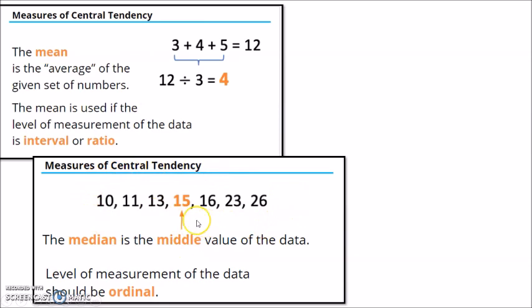And for this example, we have here 15 as the middle value, and that's the median. So it's better to use the median when the data is ordinal, or ranked data.